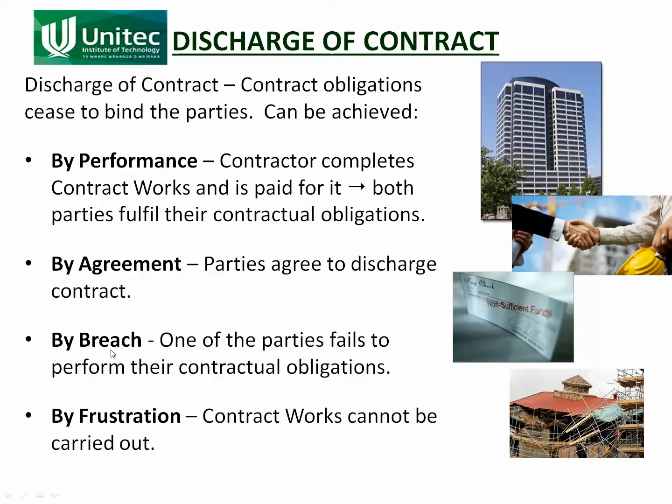Another way a contract can be discharged is by breach. One of the parties fails to perform their obligations. The main obligation of the contractor is to build the contract works; the main obligation of the client is to pay him for it. When a breach happens, the party that is in breach is said to be in default, and we'll talk about this more in the next slide.